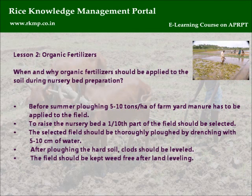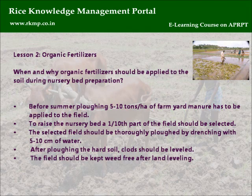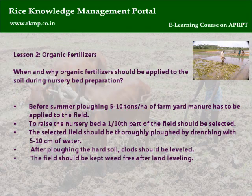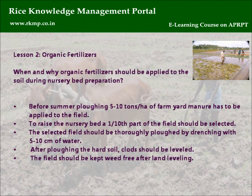Lesson 2: Organic Fertilizers. During nursery bed preparation, before summer plowing, 5 to 10 tons per hectare of farm yard manure has to be applied to the field. To raise the nursery bed, a one-tenth part of the field should be selected. The selected field should be thoroughly plowed by drenching with 5 to 10 centimeters of water. After plowing, hard soil clods should be leveled, and the field should be kept weed-free after land leveling.